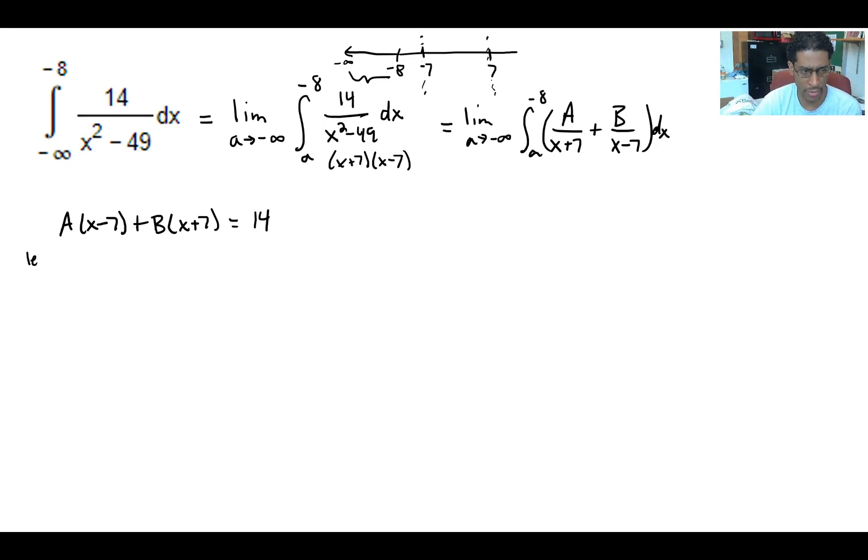We can let x equal 7 and that would help us be able to solve directly for B because we'd have 0 times A, 14 times B, and it'd be equal to 14, so B is exactly 1. Then we're going to let x equal negative 7 and we'll have negative 14A plus 0 times B is equal to 14, so A is equal to negative 1.